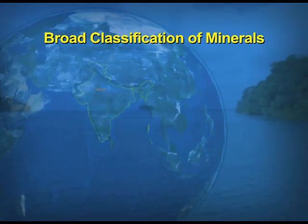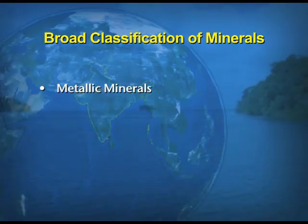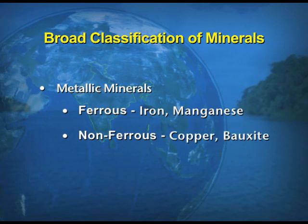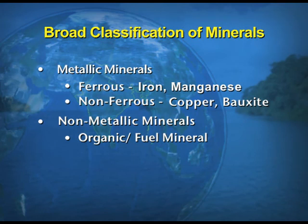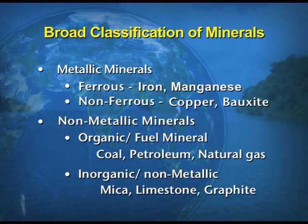Minerals are broadly divided into two types: metallic and non-metallic. Metallic minerals contain metal content — such as gold, silver, iron, and copper. Metallic minerals are further divided into ferrous (containing iron, e.g., iron and manganese) and non-ferrous (e.g., copper, bauxite). Non-metallic minerals are divided into organic fuel minerals (coal, petroleum, natural gas) and inorganic non-metallic minerals (e.g., mica, limestone).